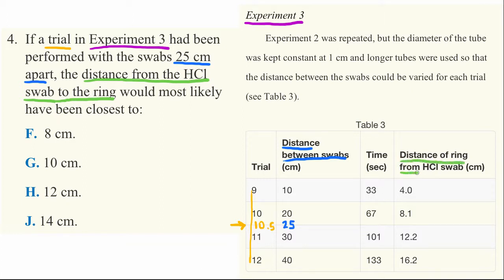The distance of the ring from the HCl swab. And we need to understand the relationship between blue and green here. So what we see is as the distance between swabs increases, so does the distance of the ring from the HCl swab.